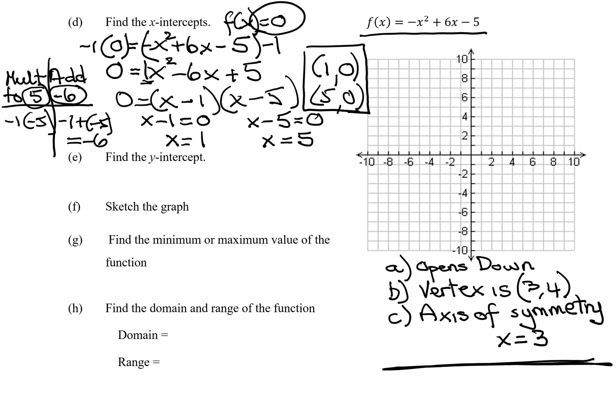The y-intercept is so much easier to find. It's when x equals 0. So that is f of 0, which is negative 0 squared plus 6 times 0 minus 5. So it just equals the constant term negative 5. So what is my y-intercept? 0, negative 5.